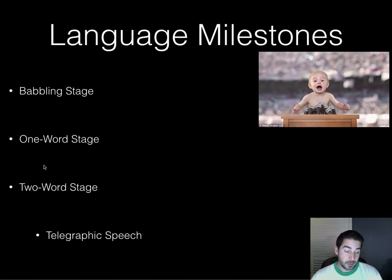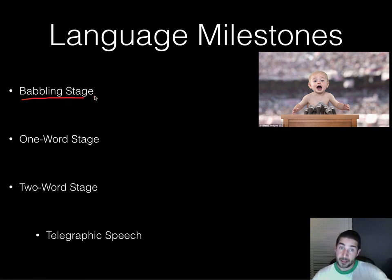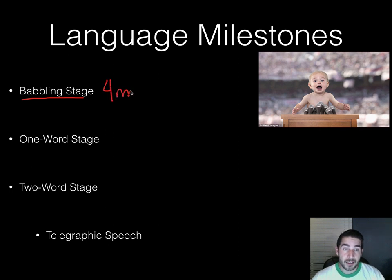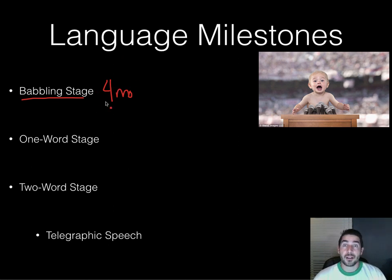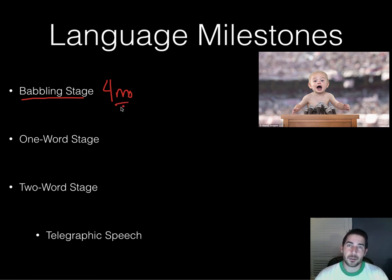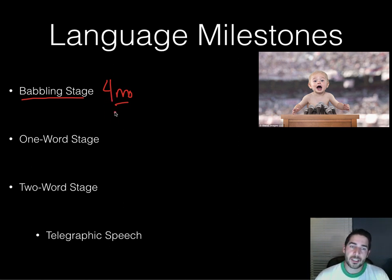Now, when developing language, what milestones do we hit? First, babies start babbling. My son, who is six months old, is in the babbling stage right now. Babbling starts at about four months — you just start making sounds that don't have to mean anything and don't have to resemble the language spoken at home.